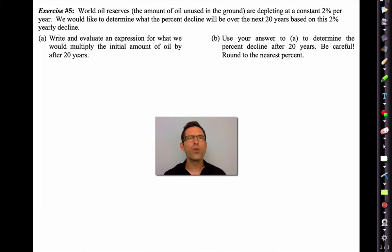World oil reserves, the amount of oil unused in the ground, are depleting at a constant 2% per year. So they're going down 2% per year. We would like to determine what the percent decline will be over the next 20 years based on this 2% yearly decline. Letter A says, write an evaluated expression for what we would multiply the initial amount of oil by after 20 years. Well, keep in mind that every year, we're not going to multiply by 0.02. We're going to be multiplying by 0.98.